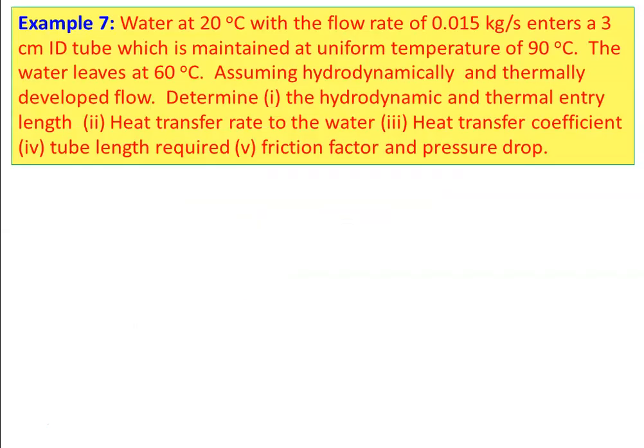Example number 7: Water at 20°C with a flow rate of 0.015 kg/s enters a 3 cm internal diameter tube maintained at a uniform temperature of 90°C. The water leaves at 60°C. Assuming hydrodynamically and thermally developed flow, determine: (1) hydrodynamic and thermal entry length, (2) heat transfer rate to the water, (3) heat transfer coefficient, (4) tube length required, and (5) friction factor and pressure drop.